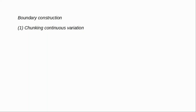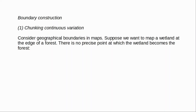The first type of boundary construction is what I'm calling chunking continuous variation. The simplest example is provided by geographical boundaries in maps. Consider drawing the boundaries of a wetland where at no one point is there a clear distinction between the wetland and the surrounding areas such as forest, and where the wetland will expand and recede over the year. Sismondo and Crisman, in their article 'Deflationary Metaphysics and the Natures of Maps', find that in the official designations of wetland, only 8% of the area defined as wetland by one source was defined as wetland by all four.